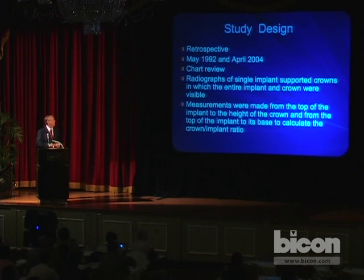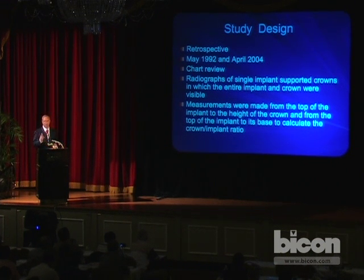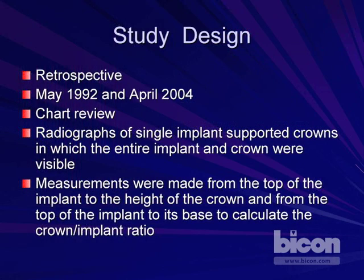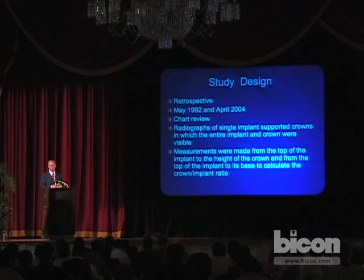The study design is retrospective. The study was conducted at the Implant Dentistry Center in Boston, Massachusetts. It included patients who received one or more single-tooth implants between May of 1992 and April of 2004. A chart review was done to secure radiographs of single implant-supported crowns in which the entire implant and crown were visible. Measurements were made from the top of the implant to the height of the crown and from the top of the implant to its base to calculate the crown implant ratio.